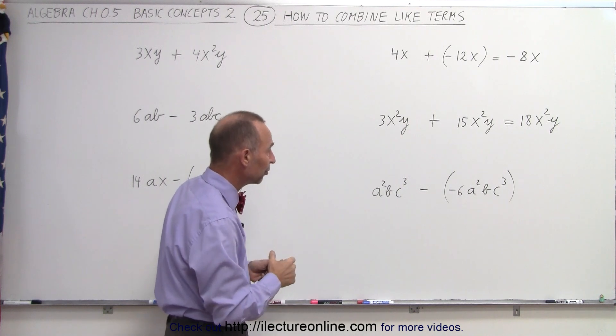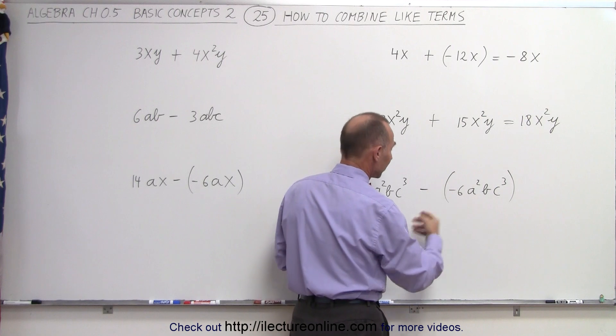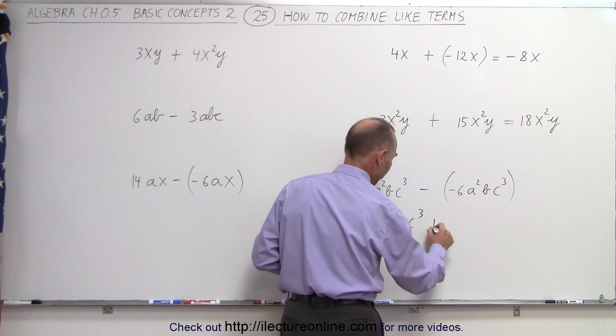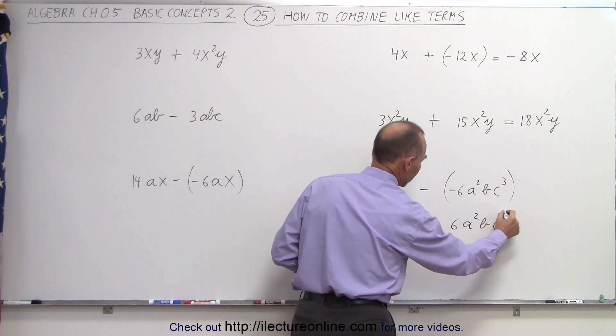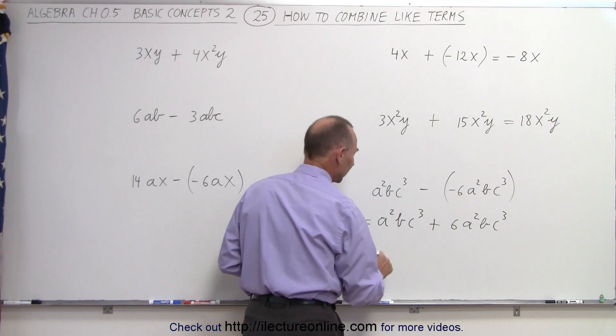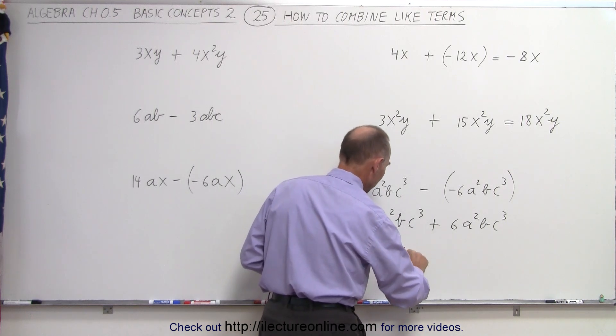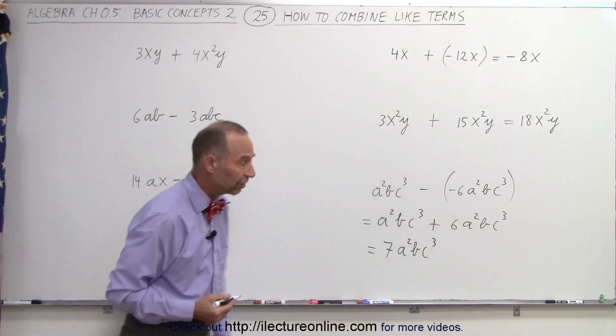Subtracting a negative number is like adding a positive number, so this can be written as a²bc³ plus 6a²bc³. When we add them together, there's one of these plus six of these, giving us 7a²bc³. That's really how you want to interpret these terms.